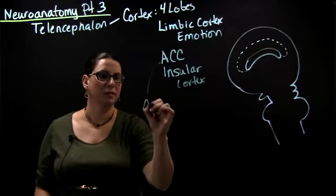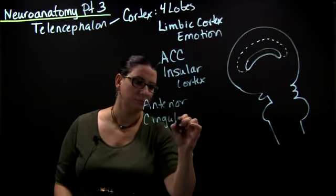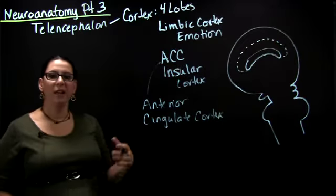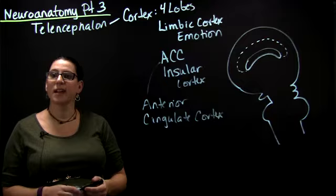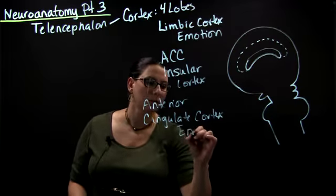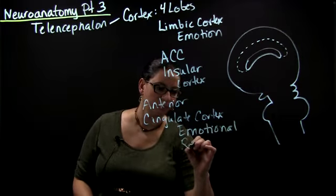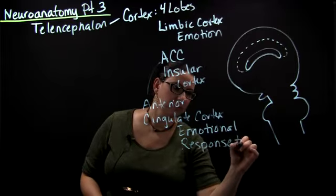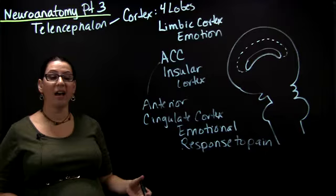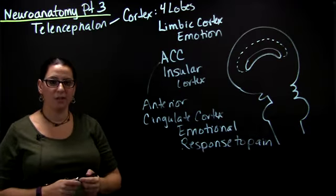This is anterior cingulate cortex. The anterior cingulate cortex is actually really important in the emotional response to pain. And the pain-reducing impact of morphine happens by decreasing activity in the anterior cingulate cortex.